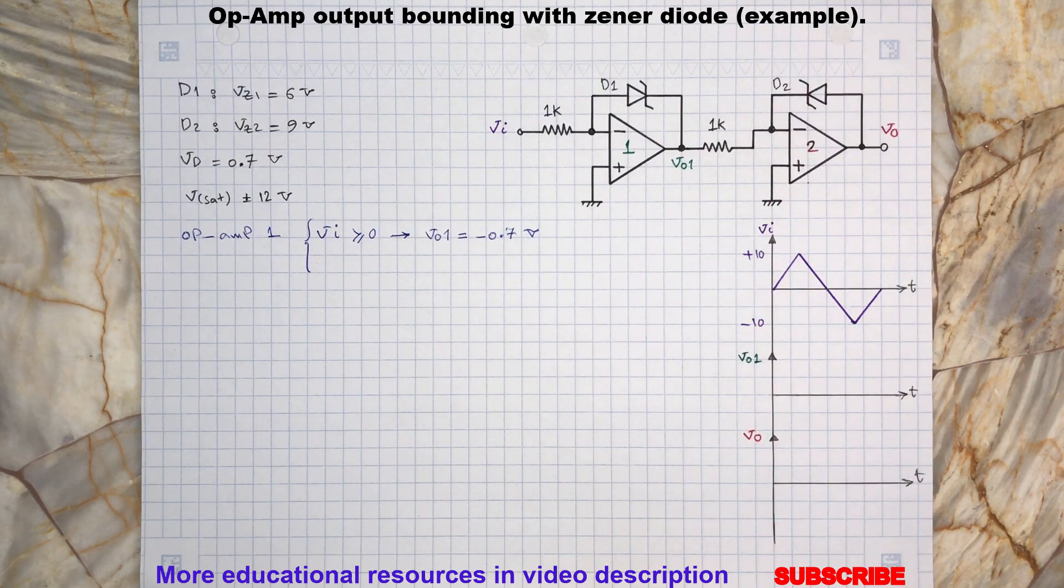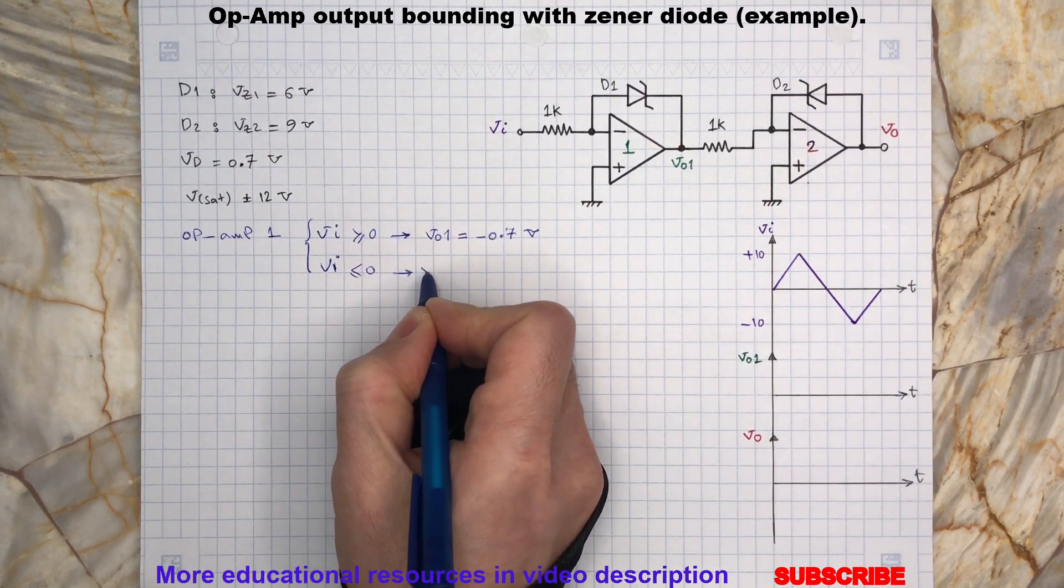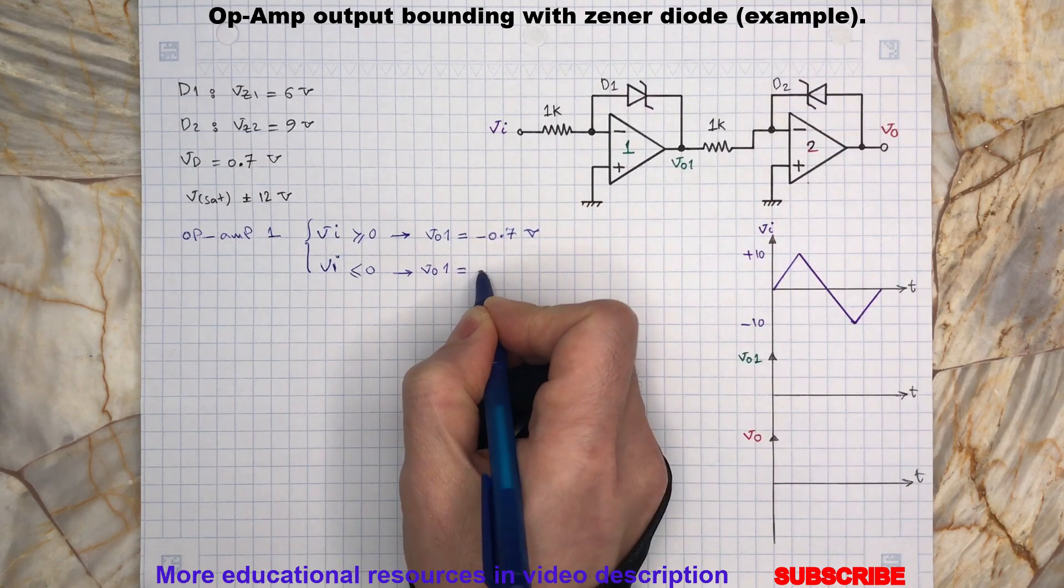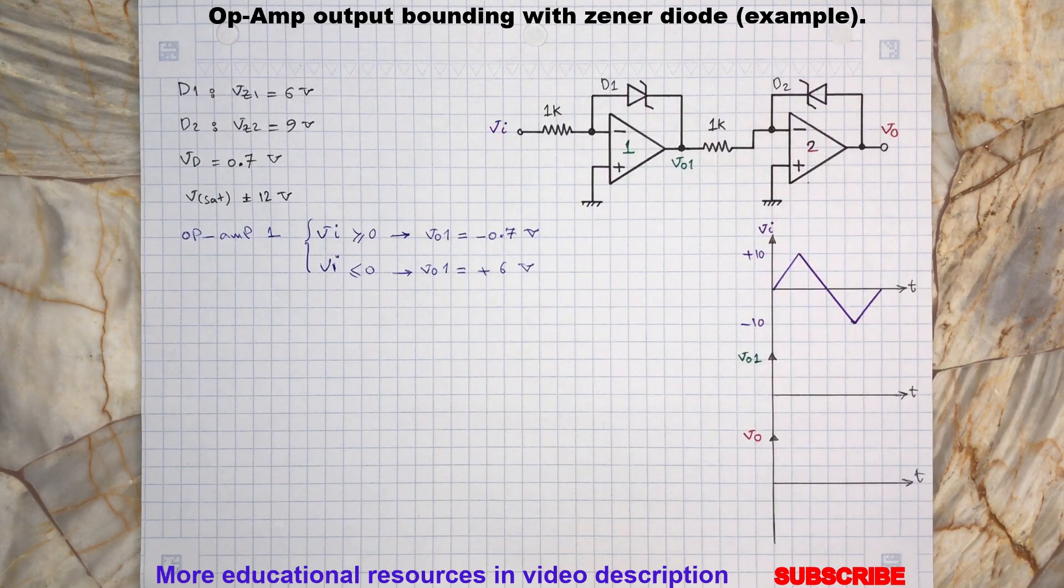The zener diode will be at its breakdown region and will limit the output to positive 6 volts. Again, remember this is because the D1 anode terminal is virtually grounded.